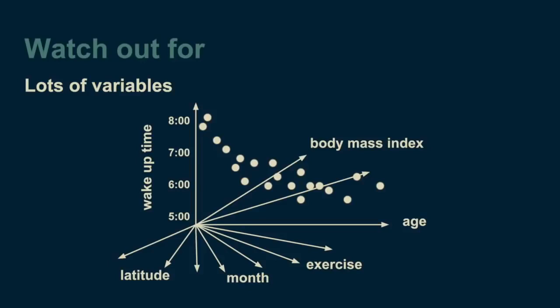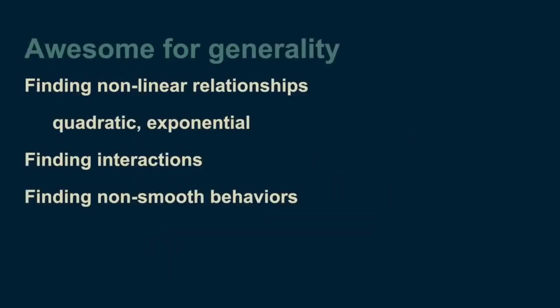As long as you keep your eyes open for places where decision trees might fail, you're free to take advantage of their strengths. Decision trees are fantastic when you want to make as few assumptions about your data as possible. They can find nonlinear relationships and interactions — quadratic, exponential, cyclical — as long as you have enough data to support all the necessary cuts. They can also find non-smooth behaviors, sudden jumps, and peaks that other models like linear regression or neural networks can sometimes hide. There's a good reason decision trees consistently outperform other methods on data-rich problems. Thanks for tuning in, and I hope this is helpful in building your next project.